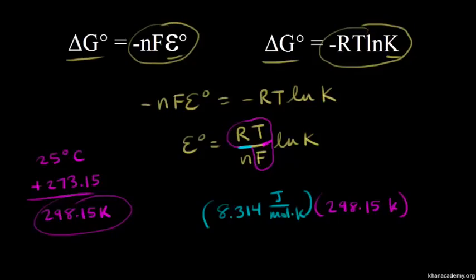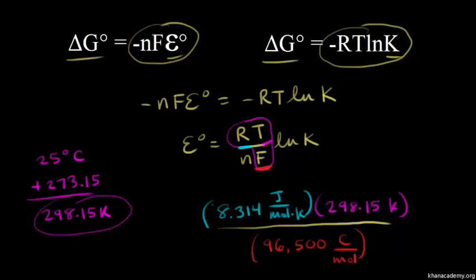This is all over Faraday's constant. F is Faraday's constant, which is 96,500 Coulombs per mole, the charge of one mole of electrons.